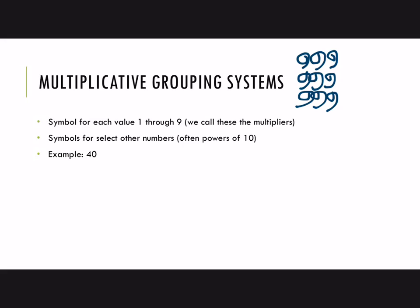So in the multiplicative grouping system, they came up with a way to just record that there were nine of those symbols rather than writing them all out.